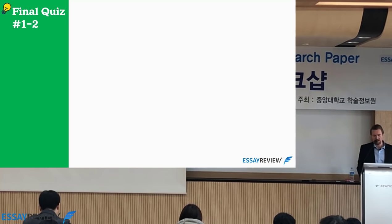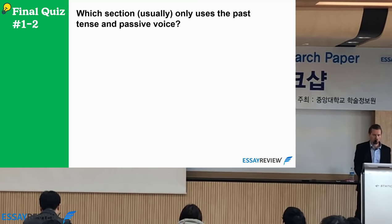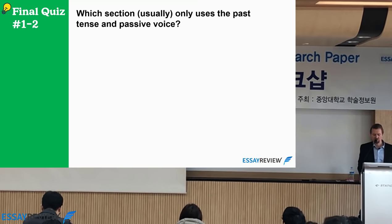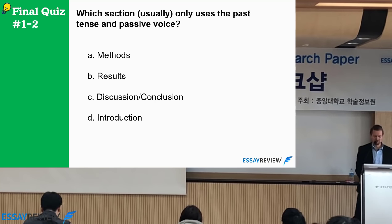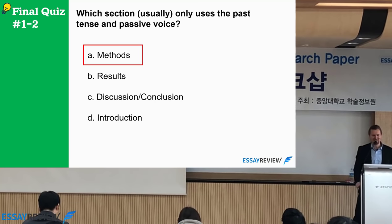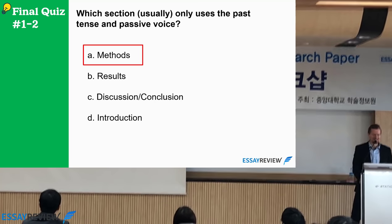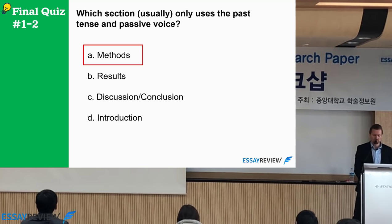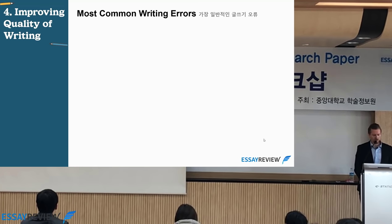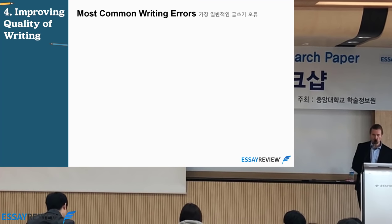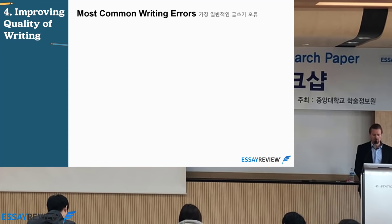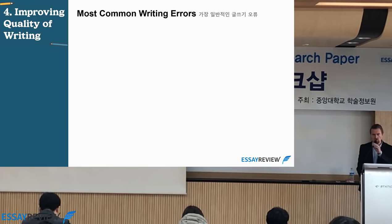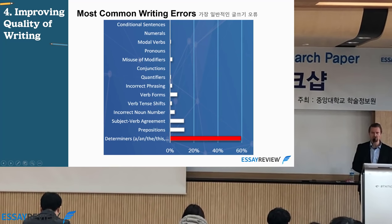Which section usually uses past tense and passive voice? Methods, results, discussion, or introduction? The answer is methods — usually, and I say usually because it's not a strict rule. The methods section stands out because the other sections generally do not use passive voice. Now let's talk about improving some common writing errors. We want to show you some of the biggest grammar issues that writers make.